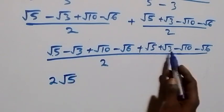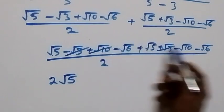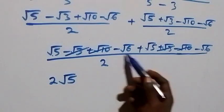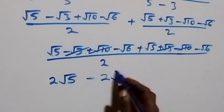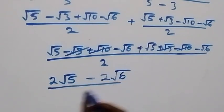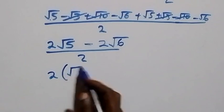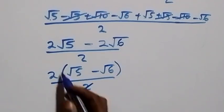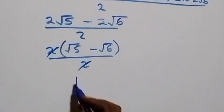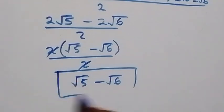√5 + √5 = 2√5; −√3 + √3 cancels; +√10 − √10 cancels; −√6 − √6 = −2√6. So the numerator is 2√5 − 2√6 over 2, which simplifies to √5 − √6.